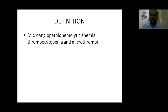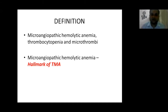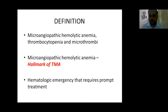Thrombotic microangiopathy is a group of disorders characterized by microangiopathic hemolytic anemia, thrombocytopenia, and microthrombi. These microthrombi are the main culprit for the spectrum of the disease. They clog the capillaries and cause end organ damage, leading to the symptoms presented in this disease. The microangiopathic hemolytic anemia is the hallmark of TMA. There are several types of TMAs, and whatever may be the type, this is a hematologic emergency that requires treatment at the earliest.